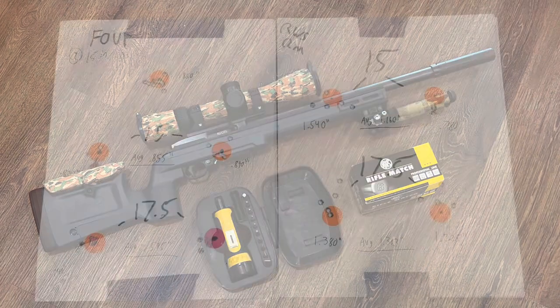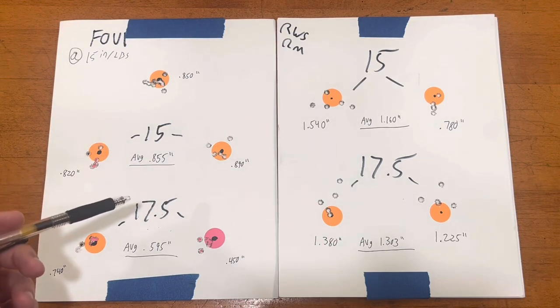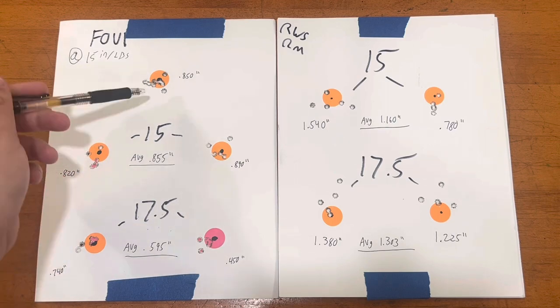All right, so we've got the targets here on the table. I don't know if I mentioned before, but this is all shot at 50 yards. We have the Hogue overmold here on the left and the KRG Bravo here on the right.